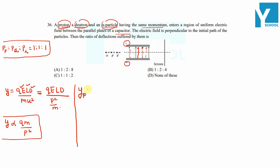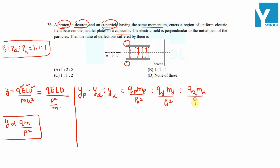Therefore, displacement of proton : displacement of deuteron : displacement of alpha particle equals (charge of proton × mass of proton) / (momentum of proton)² : (charge of deuteron × mass of deuteron) / (momentum of deuteron)² : (charge of alpha × mass of alpha) / (momentum of alpha)². Since all momenta are equal, this simplifies to Qp·Mp : Qd·Md : Qα·Mα.